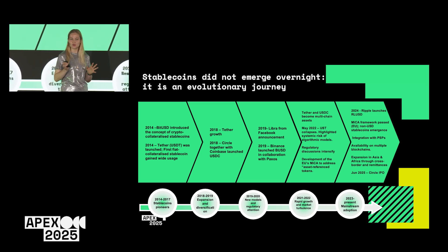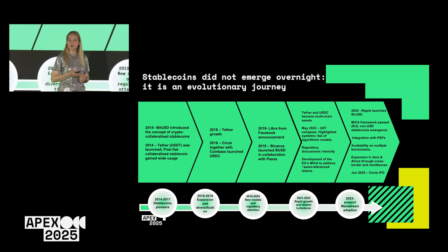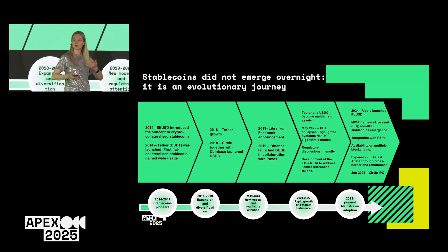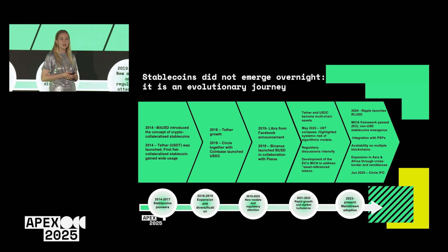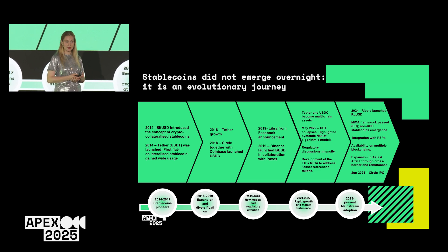I'm going to start from the very first stage, which I call stablecoin pioneers. Stablecoins have a history of 10-plus years. The first one was created in 2014 — that's when the idea of a cryptocurrency backed by an asset was born. Also in 2014, Tether was launched, which is the largest stablecoin issuer, and it was also the first time we started to speak about fiat-backed stablecoins.